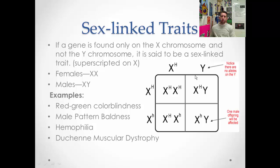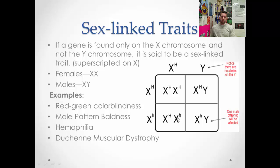Duchenne's muscular dystrophy is another example. This Punnett square is for hemophilia, which is an X-linked recessive trait carried by X little h. A female who is X^H X^H would be normal. A male X^H Y would also be normal. A female who is X^H X^h would be normal but a carrier. A male X^h Y would have hemophilia because he has the X little h allele.